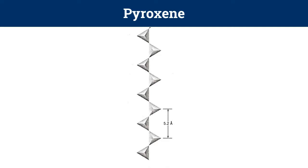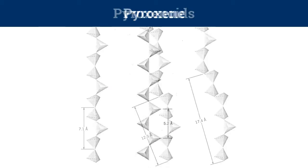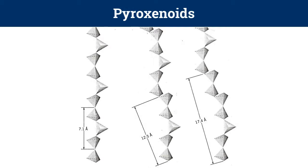In pyroxene, every tetrahedron has the same orientation, which means that the bases of the SiO4 tetrahedra lie in the same plane, as evident from the chain shown. But pyroxenoids do not have this identical structure. They have kinked chains which exhibit a longer repetition distance.